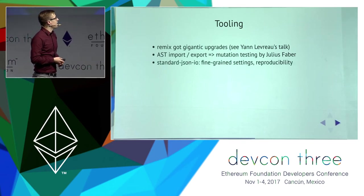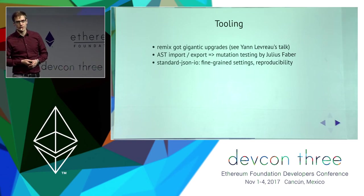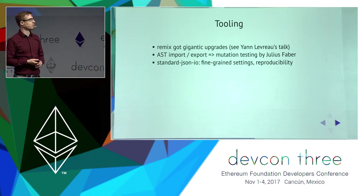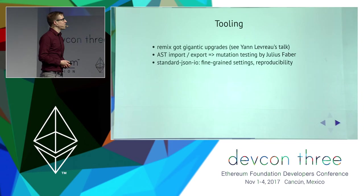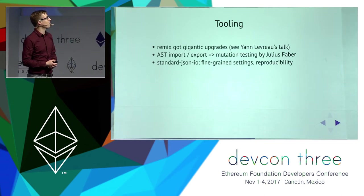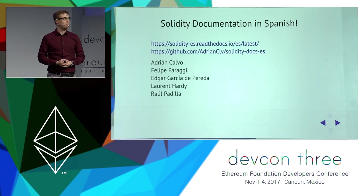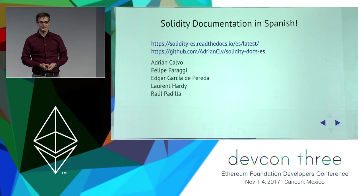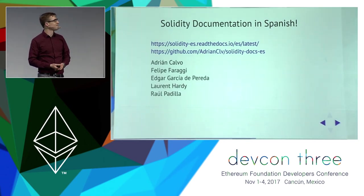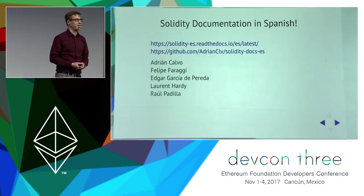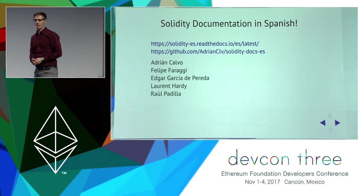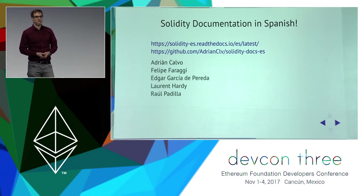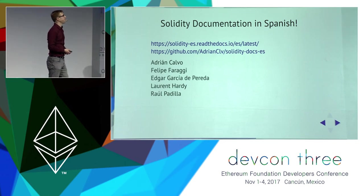We also have a standard JSON IO, which provides more fine-grained control over compiler settings. And a very special announcement: the Solidity documentation, previously only available in English, is now also available in Spanish, thanks to five people who did this in their free time as voluntary contributors. This is really important to make Ethereum accessible to the world, and languages like Chinese or Russian should also have their own translations.